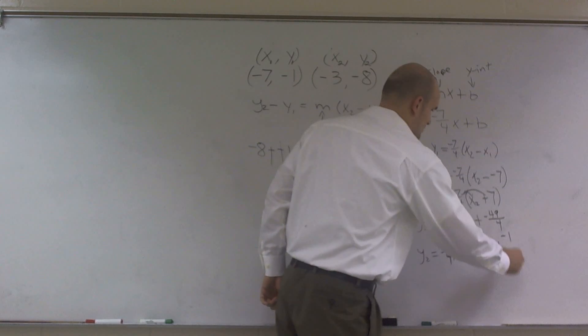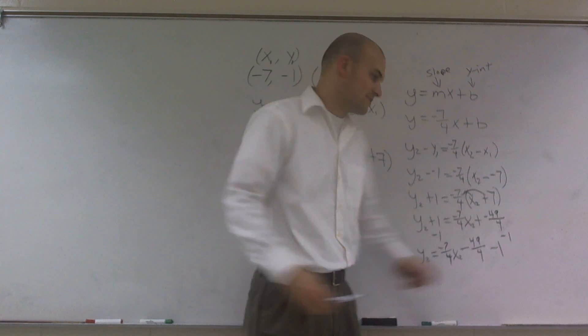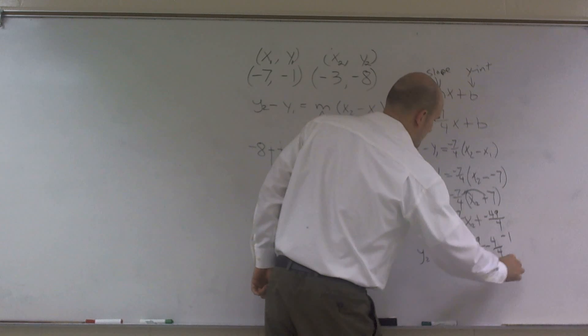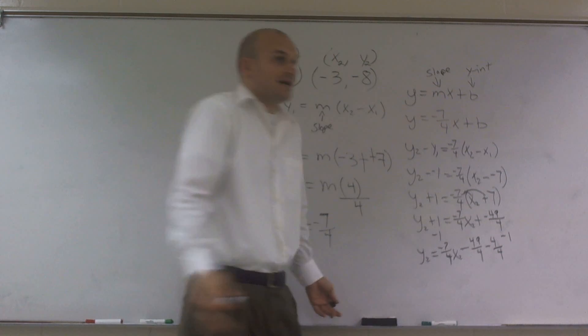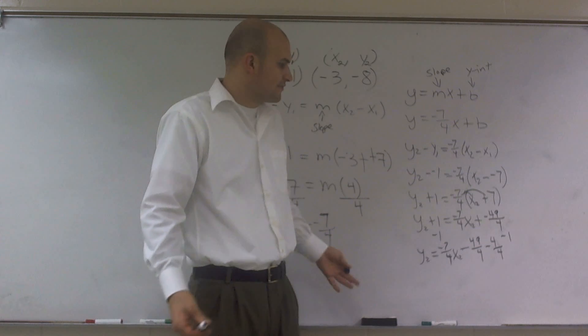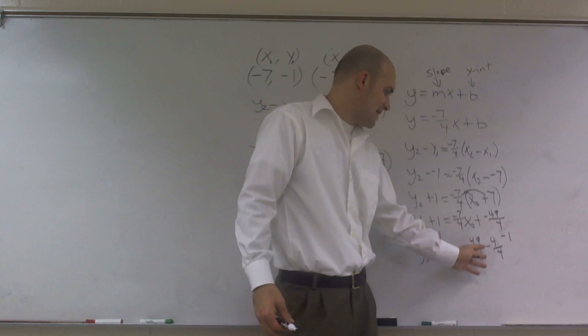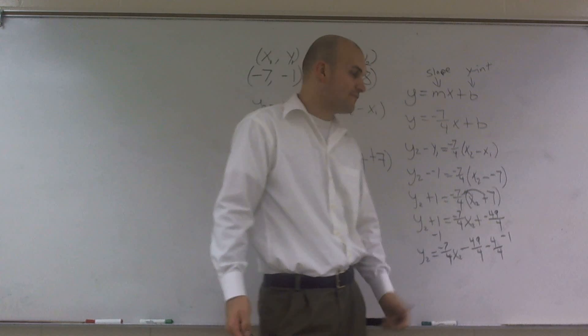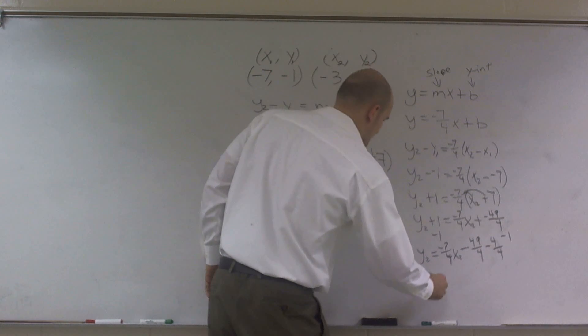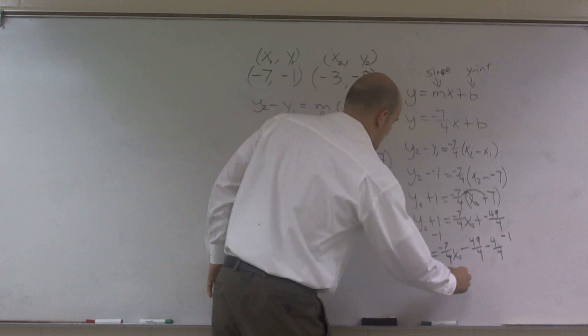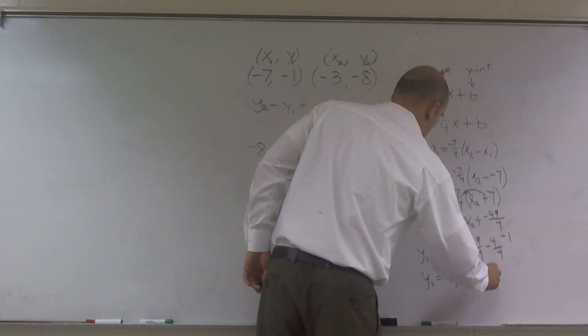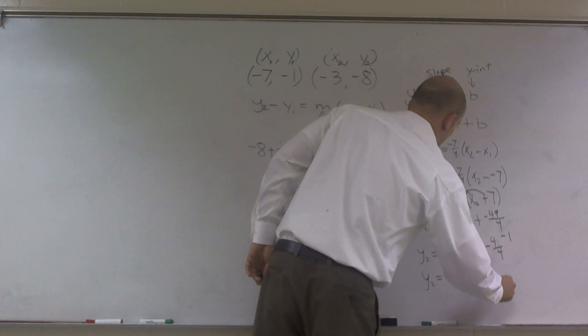And then, guys, we don't need to write minus 1. You could write minus 1, but we need to simplify this, right? So instead of writing minus 1, I'm going to say minus 4 over 4. Because that's exactly what negative 1 is. You can rewrite it as negative 4 over 4. Now, since these have the same basis, I can do negative 49 minus a negative 4, which would be a negative 53. OK?